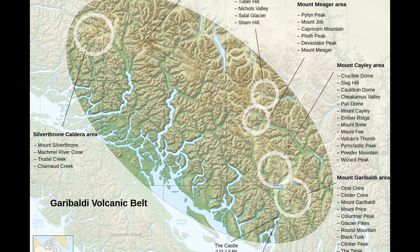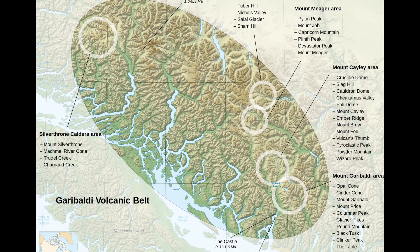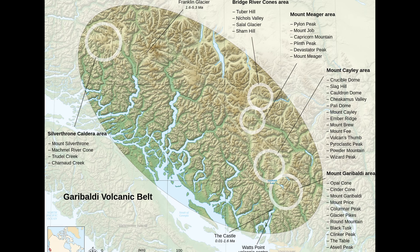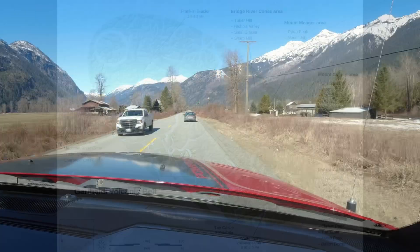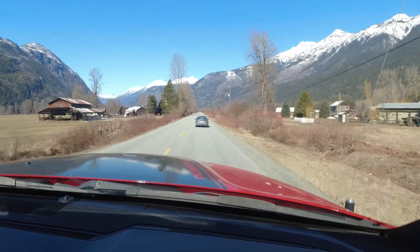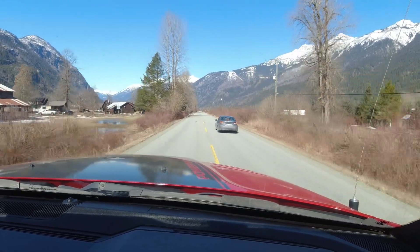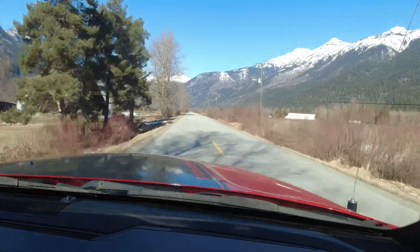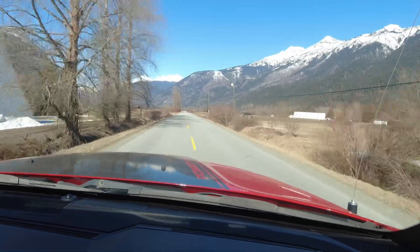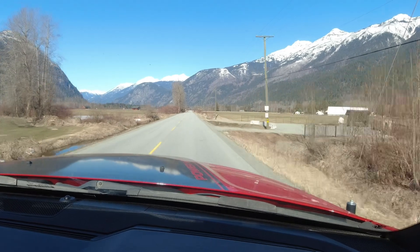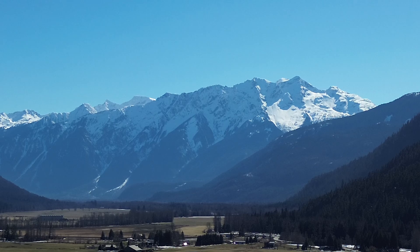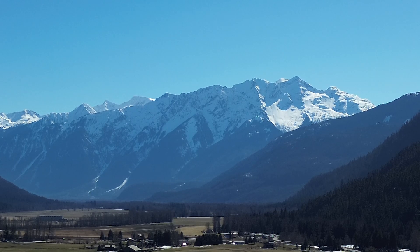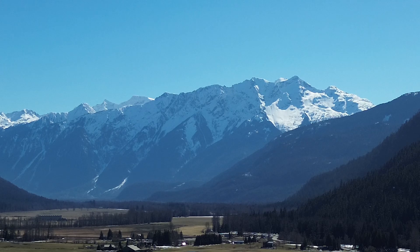We're in the middle of the Garibaldi volcanic belt. The Squamish volcanic field is at the bottom; the Mount Cayley and Garibaldi Lake volcanic fields are where we are now in the middle; and once we pass Pemberton, we'll enter the northern end — the Bridge River Cones and Mount Meager volcanic complex. We're heading over to Mount Meager because it's definitely its own thing and deserves recognition.